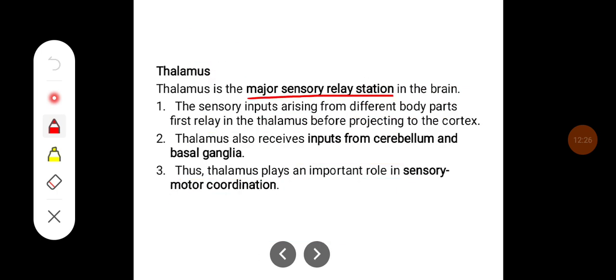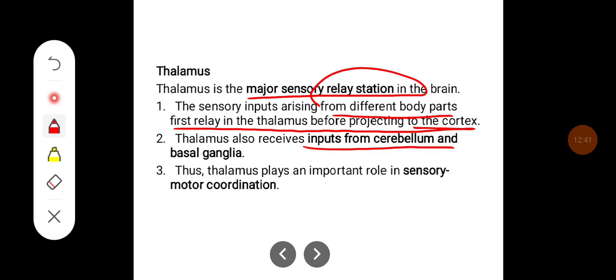The thalamus is a major sensory relay station in the brain. Sensory inputs arising from different body parts first relay in the thalamus before projecting to the cortex. The thalamus also receives input from the cerebellum and basal ganglia, and thus plays an important role in sensory-motor coordination.